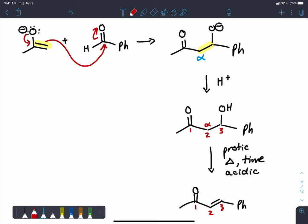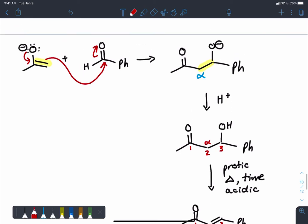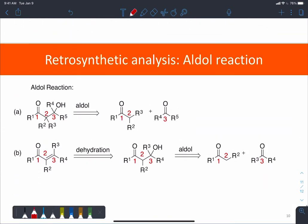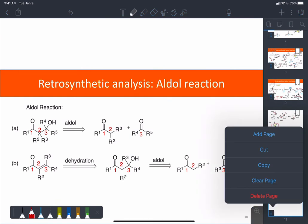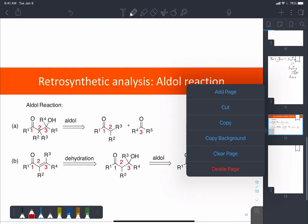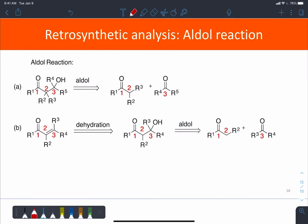So let's take a look now from the retrosynthetic direction. So now if we're looking at an aldol product, as we are on the left-hand side here, we could look and realize that there's two oxygen atoms that are one, two, three carbons apart from each other. And that could tell us that that could have come from aldol starting materials.